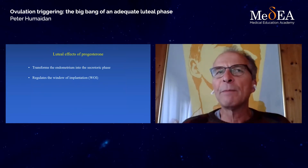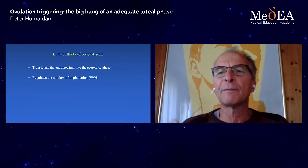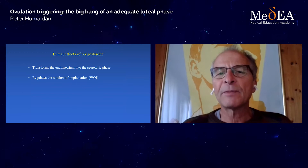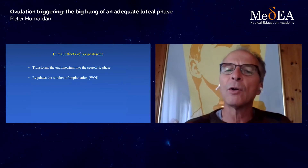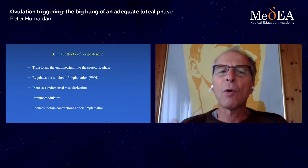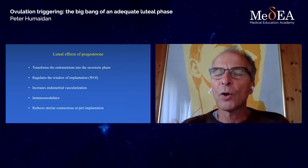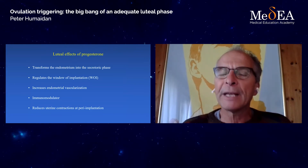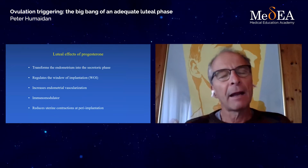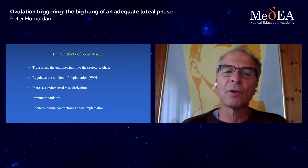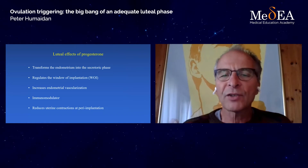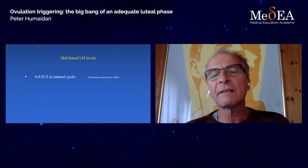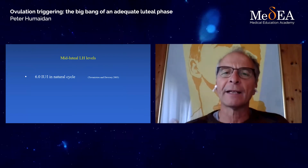Every time we mention LH, we also actually say progesterone. What are the luteal effects of progesterone? Progesterone will transform the endometrium into the receptive phase — that's the secretory phase — by opening the window of implantation. Progesterone also increases vascularization and works as an immunomodulator, protecting the embryo all the way down through the tube and also around peri-implantation in the uterus. Another important impact is that progesterone reduces uterine contractions around the time of implantation.